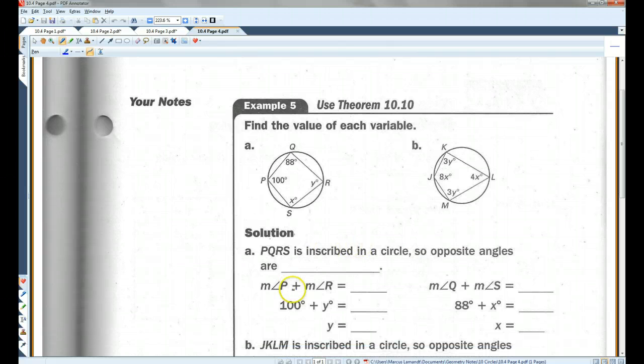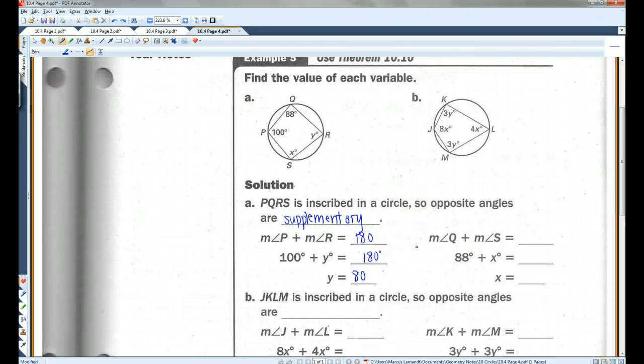Find the value of each variable. So using the theorem we just learned, opposite angles have to be supplementary. PQRS is inscribed in a circle so opposite angles are supplementary. So, in this case, angle P and angle R add up to 180 degrees. Angle P is 100 degrees. Angle R equals Y. I can subtract 100 from both sides and Y equals 80. Likewise, we need to do Q and S also. Q plus S also adds up to 180 degrees. 88 plus X equals 180. I'm going to subtract 88 from both sides and that's 92.